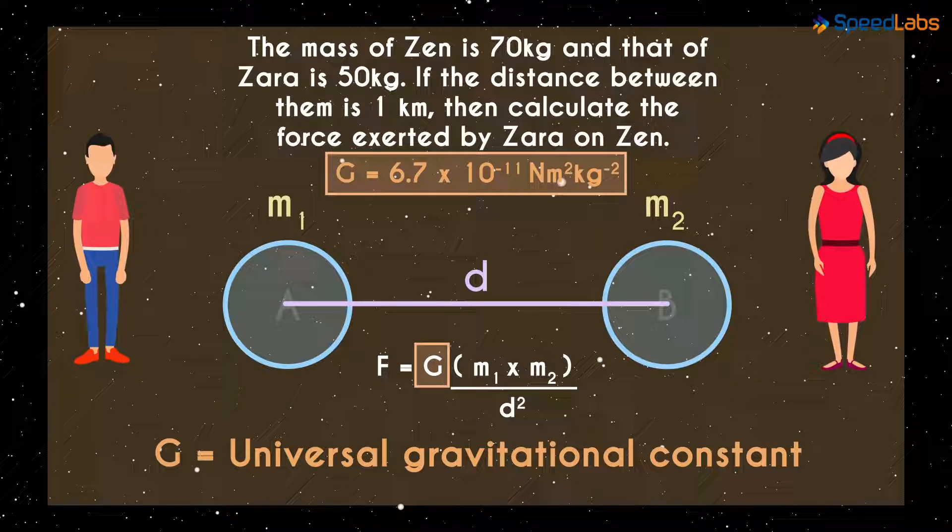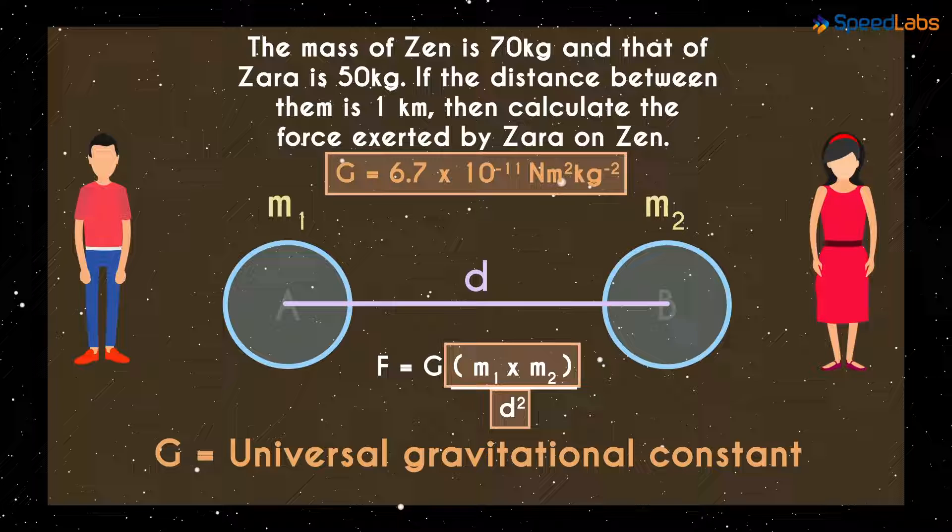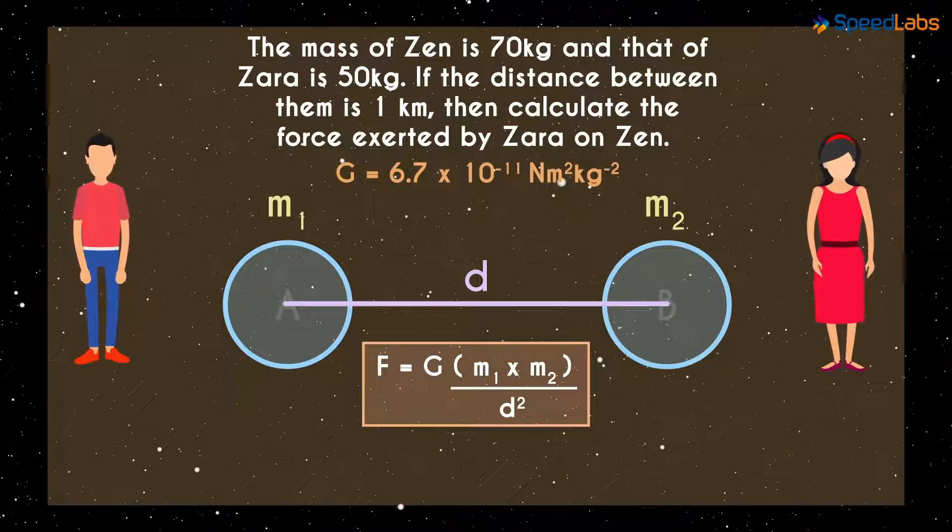The gravitational force is directly proportional to the product of the masses and inversely proportional to the square of the distance between them. This is the Universal Law of Gravitation.